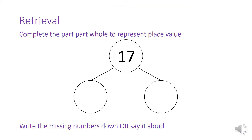Just before we start our new learning today we're going to do some retrieval practice. It says to complete the part-part-whole to represent place value. Think about the number that needs to go in each circle. What number would I put in this circle to show place value? I would put 10 to represent the tens in the number, and 7 to represent our ones. Good job, well done.